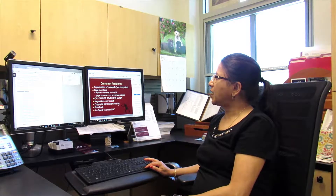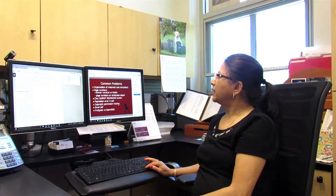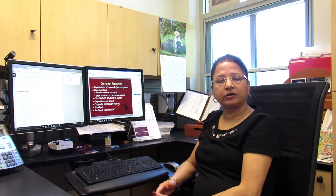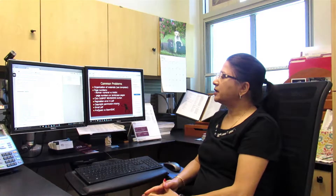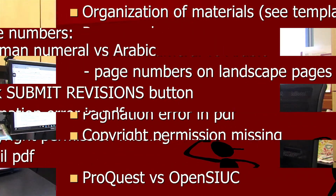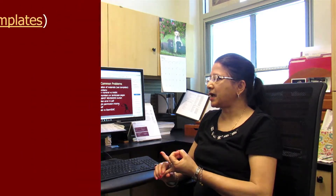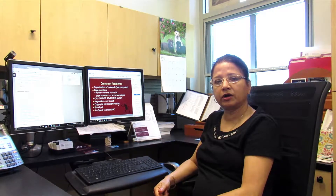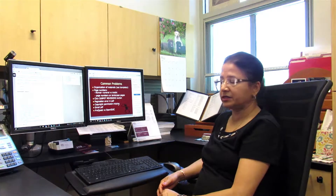To identify some of the common problems: the first is organization of materials. If you follow the templates, you must follow a certain order — first the title page, then the approval page, then the abstract, then acknowledgements, then table of contents, then list of tables and list of figures. If you follow the templates in that order, that will be the correct organization of materials.